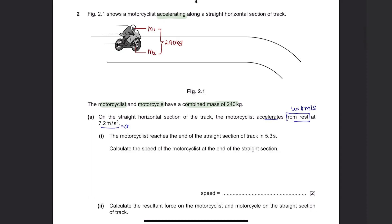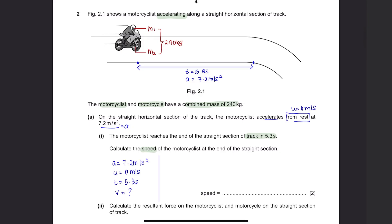Part 1: The motorcyclist reaches the end of the straight section of track in 5.3 seconds. Calculate the speed of the motorcyclist at the end of the straight section. Let's list down all the information given. Since we have the value of acceleration, we can use the formula: acceleration equals final speed minus initial speed over time. Substituting all values gives V equals 38.16 meters per second, which is approximately 38 meters per second.